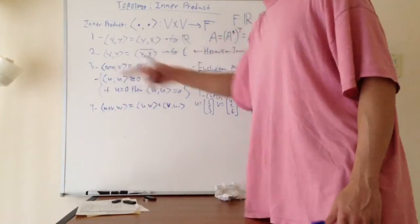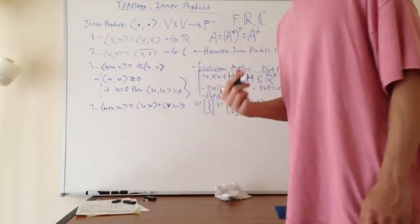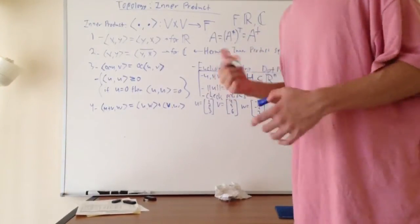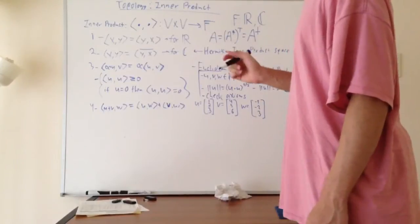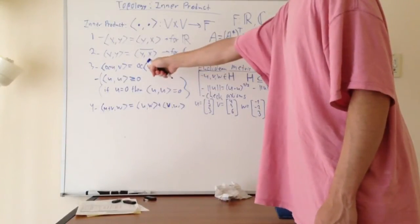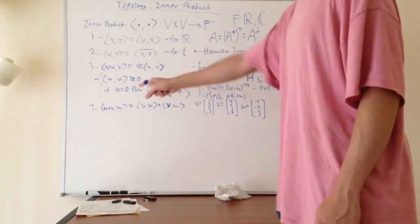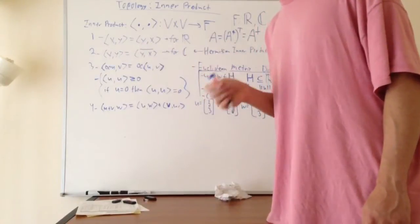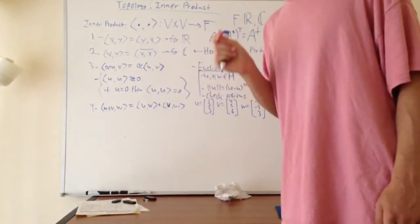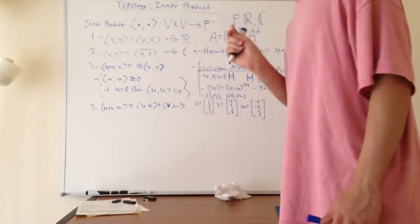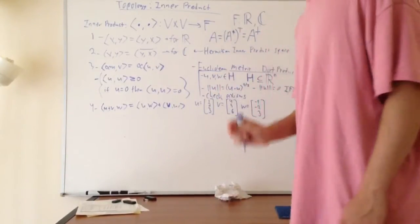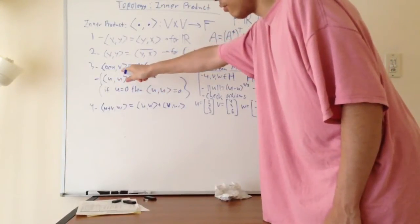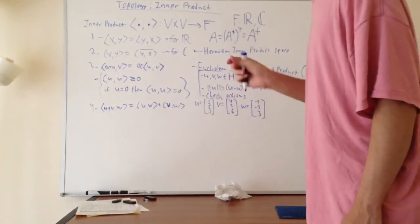The third axiom is: if we take some scalar alpha and multiply it by vector U, then take the inner product of that with V, that's exactly the same as taking the inner product of U and V and then multiplying by scalar alpha. The next axiom is that the inner product of U with itself is always greater than or equal to zero, and it equals zero only if U is the zero vector — that's the only time the inner product equals zero. Otherwise the inner product is always greater than zero.